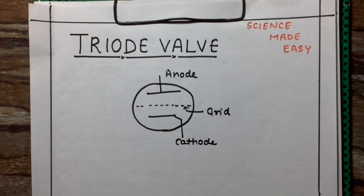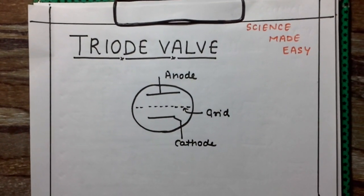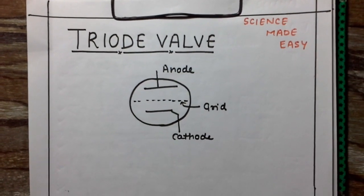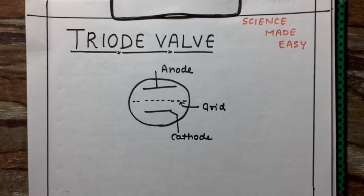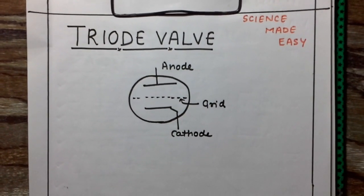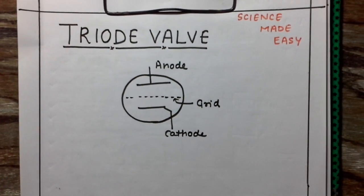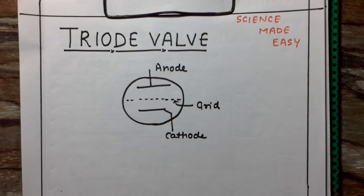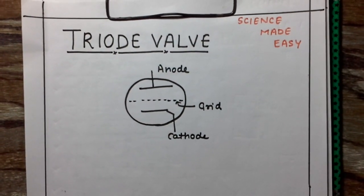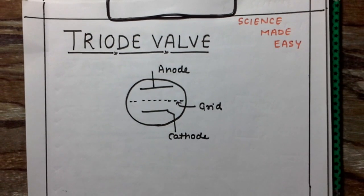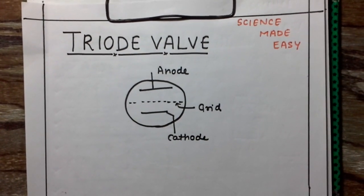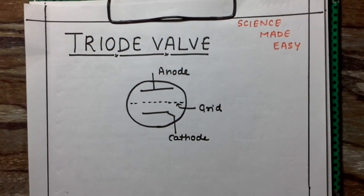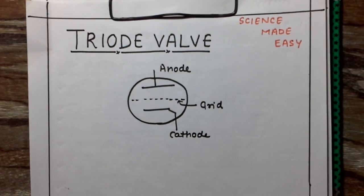In the previous video we discussed about the diode valve, in which we have two electrodes. Now why are we using three electrodes? The disadvantage of the diode valve is that once the electrons are emitted by the cathode, even after we stop heating the cathode, the electrons will still reach the plate and plate current flows. So we can't control the plate current.